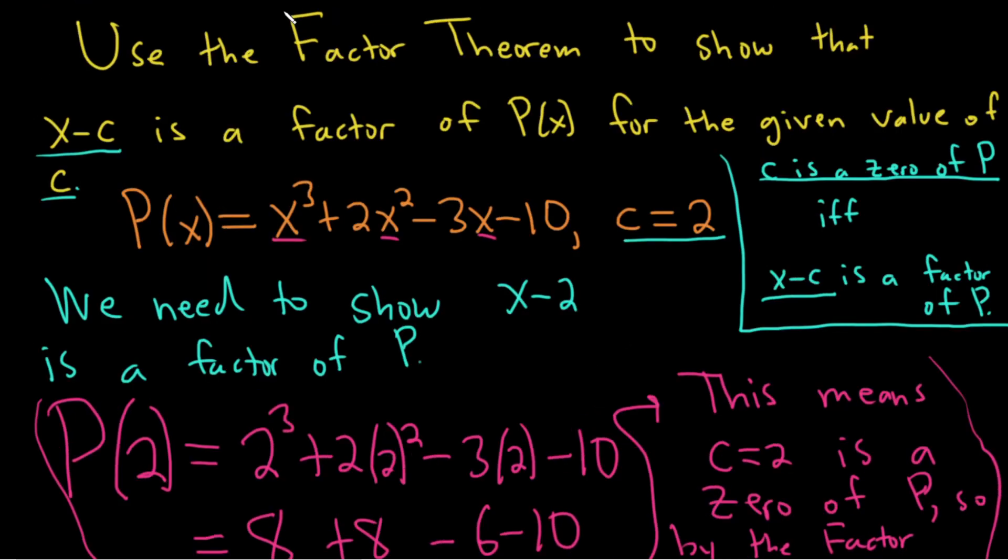So reading the directions: use the factor theorem to show that x minus c is a factor of P of x for the given value of c. What does that mean? Well, in order to understand that, you really have to know this: c is a 0 of P if and only if x minus c is a factor of P. By the way, this if and only if means that if this condition is true, then this bottom one is true, and if this bottom condition is true, then the top one is true.